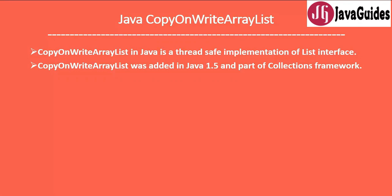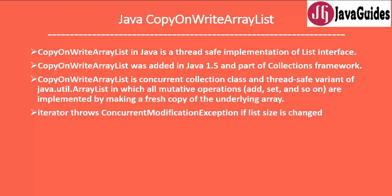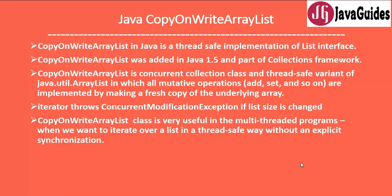CopyOnWriteArrayList was added in Java 1.5 and it's part of the Collections framework. It is a concurrent collection class and a thread-safe variant of ArrayList in which all mutative operations like add, set, remove, and so on are implemented by making a fresh copy of the underlying array. We can use CopyOnWriteArrayList to provide a solution for ConcurrentModificationException. For example, if we use an iterator to iterate over ArrayList elements and try to change something while iterating, the iterator throws ConcurrentModificationException. To avoid this, we can use CopyOnWriteArrayList.